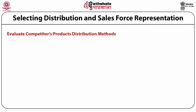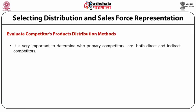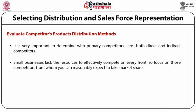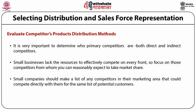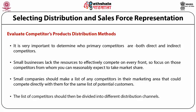Evaluate your competitors' products distribution methods. When analyzing competitors' distribution methods, it is important to determine who your primary competitors are — both direct and indirect. Small businesses lack the resources to effectively compete on every front, so focus on those competitors from whom you can reasonably expect to take market share. Small companies should make a list of competitors in their marketing area that could compete directly with them for the same potential customers. The list of competitors should then be divided into different distribution channels.